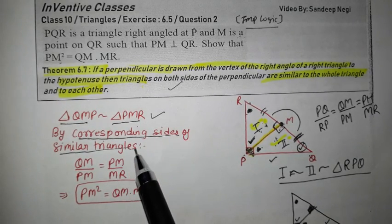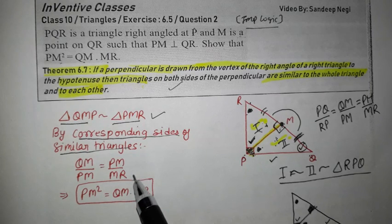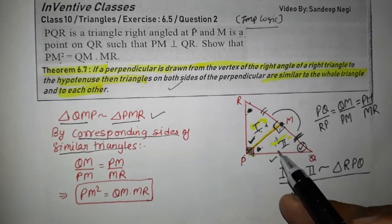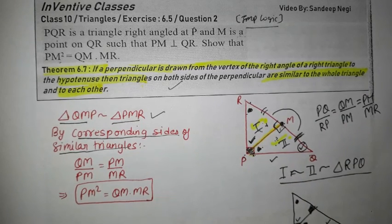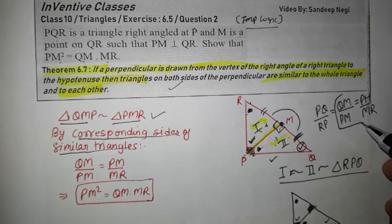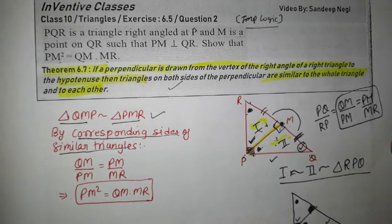These are corresponding sides of similar triangles, so the sides can be equal based on the angles. We have QM upon PM and PM upon MR equal.